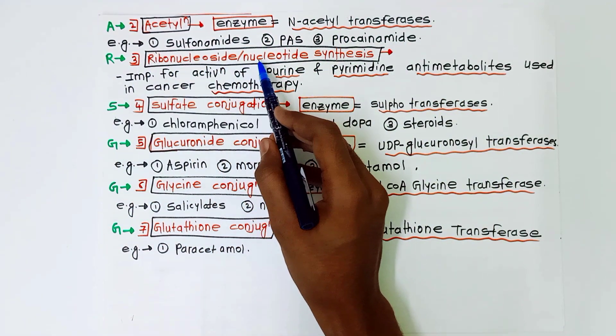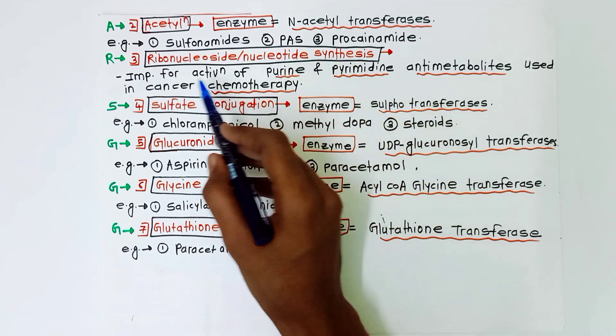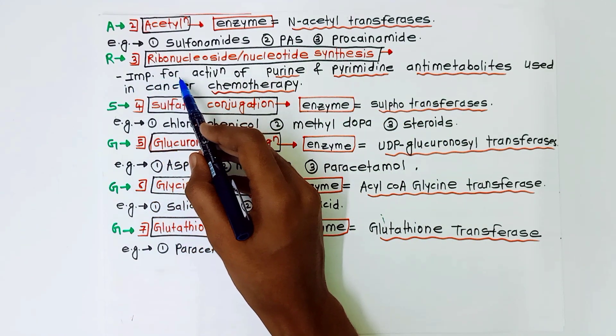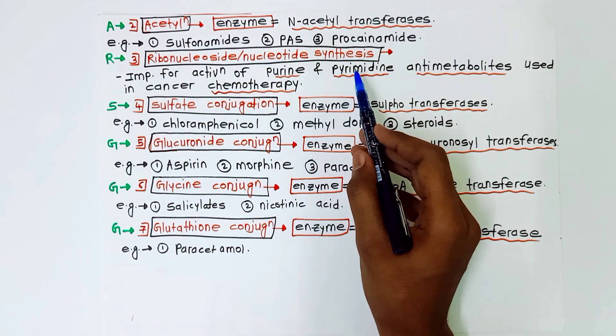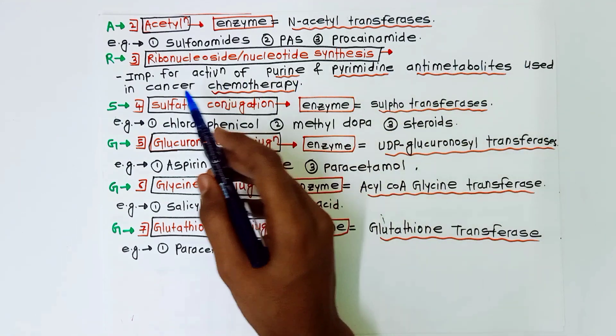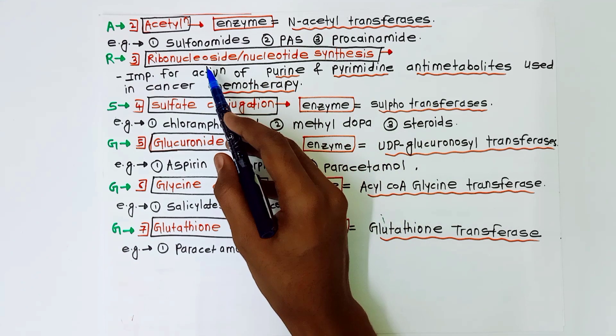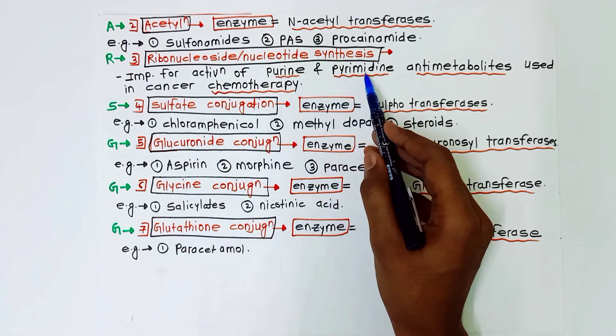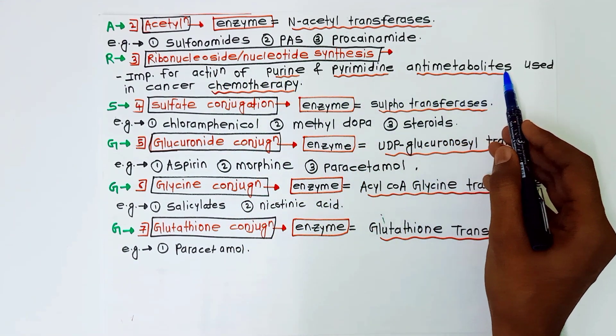R for ribonucleoside or nucleotide synthesis. These are important reactions for activation of purine and pyrimidines anti-metabolites used in cancer chemotherapy.